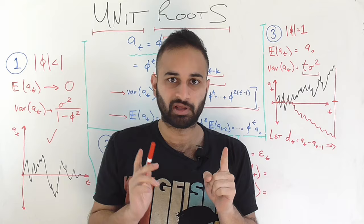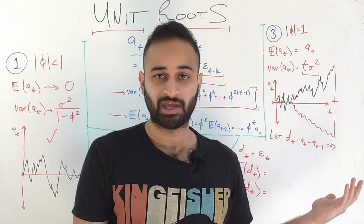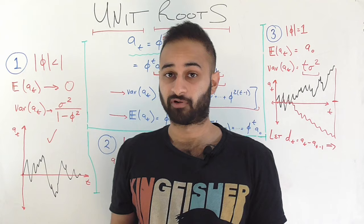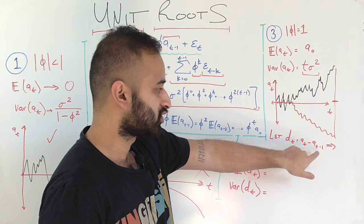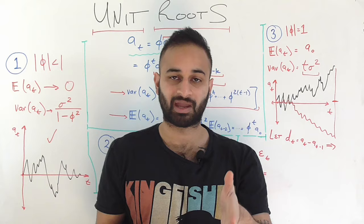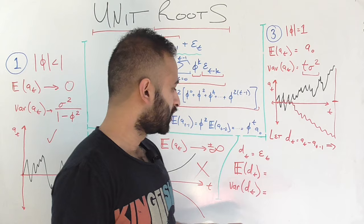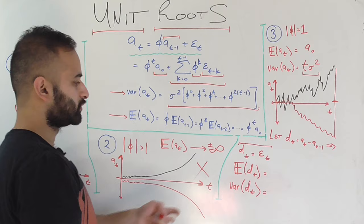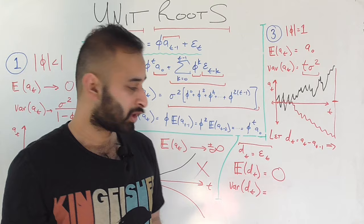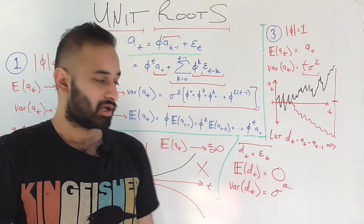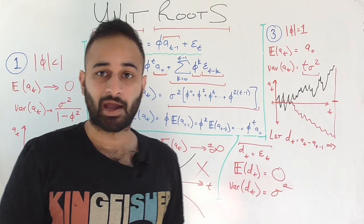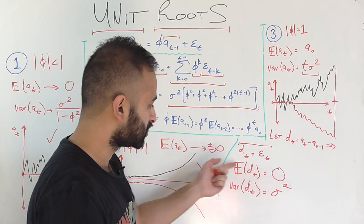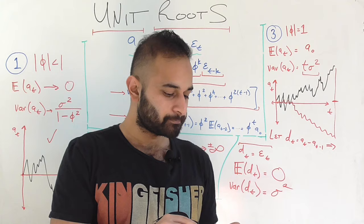One quick trick to handle this: for an AR1 model with a unit root, we can do first differencing. Define d_t = A_t - A_{t-1}. Substituting the AR1 model, this simplifies to exactly epsilon sub t. So the expected value of d_t is 0, and the variance of d_t is sigma squared — both constant over time. We have taken a non-stationary time series A_t and used this first differencing transformation to make it stationary.